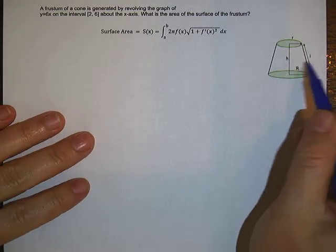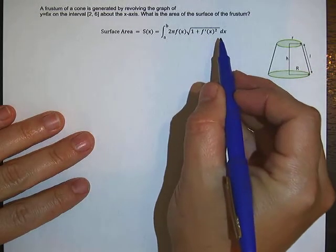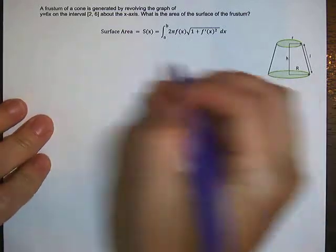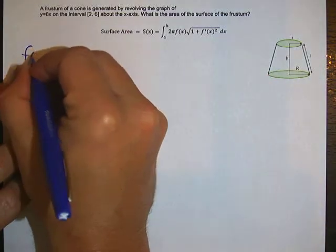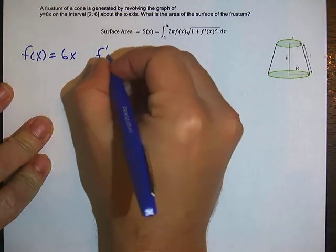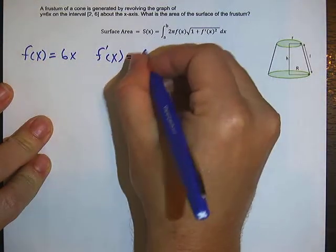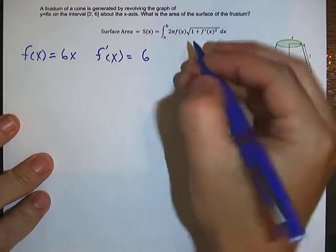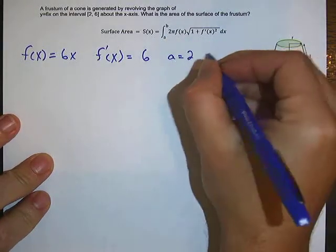We've got a frustum over here and we have our formula here. So the function f of x equals 6x, we take the derivative f prime of x equals 6 and then our a is going to be 2